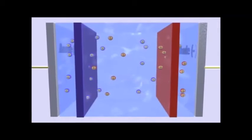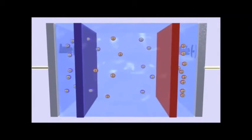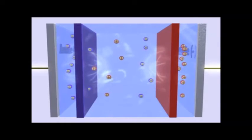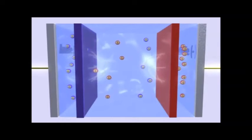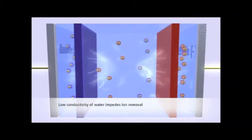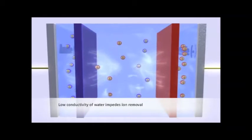This configuration of membranes and electrodes forms the framework of a CEDI module. This process is limited, however, by the slow speed at which ions move through water. In effect, the low conductivity of water impedes ion removal.